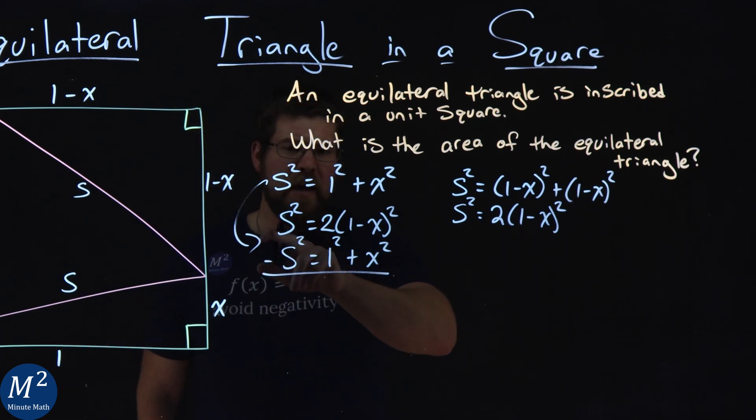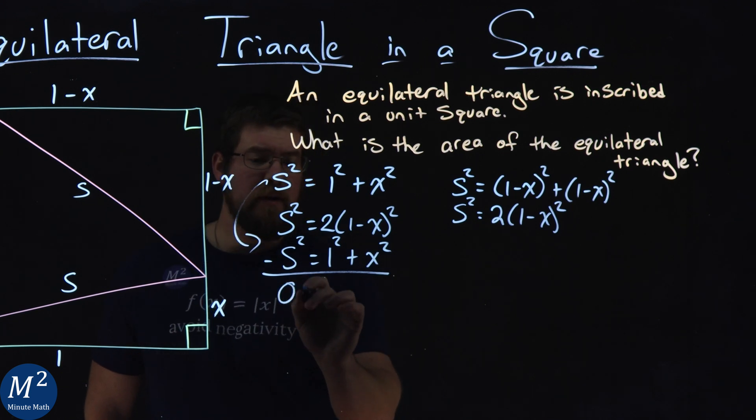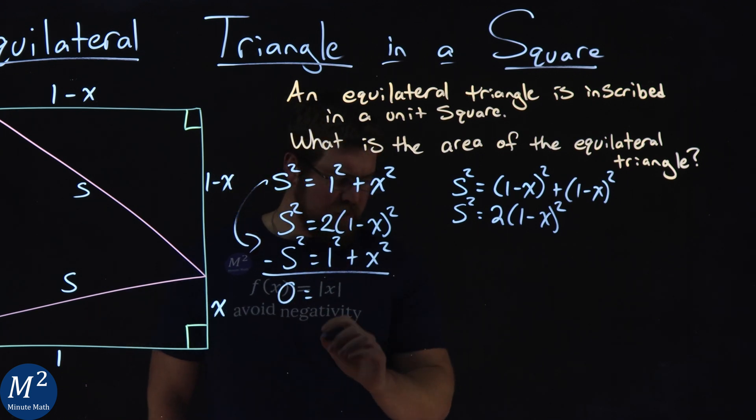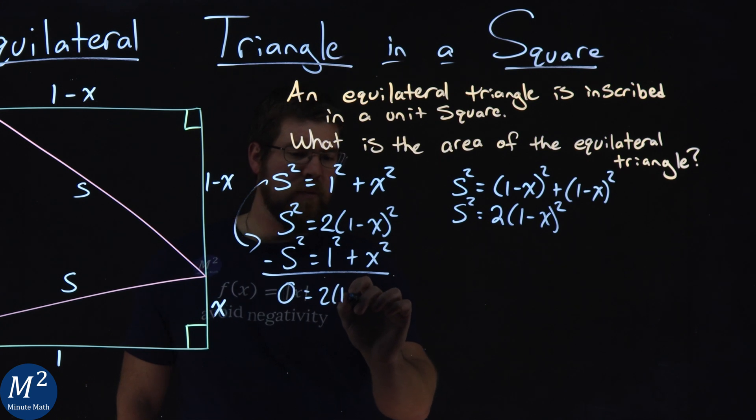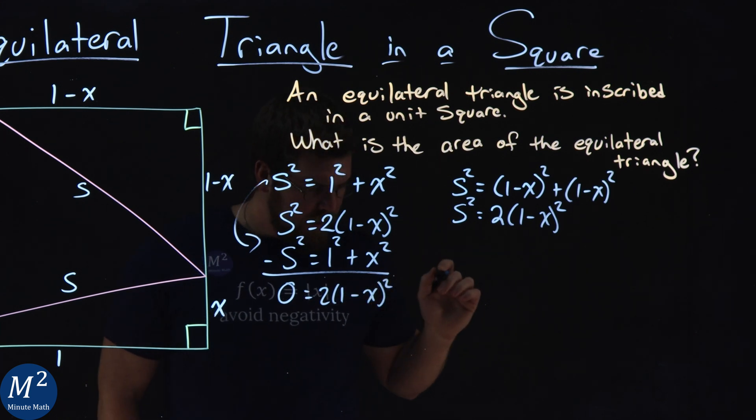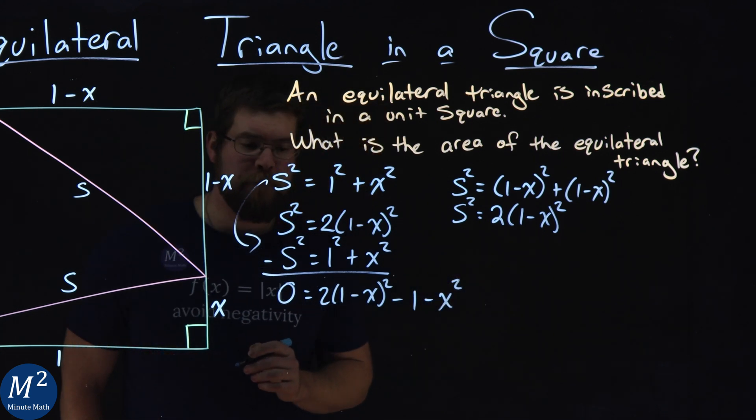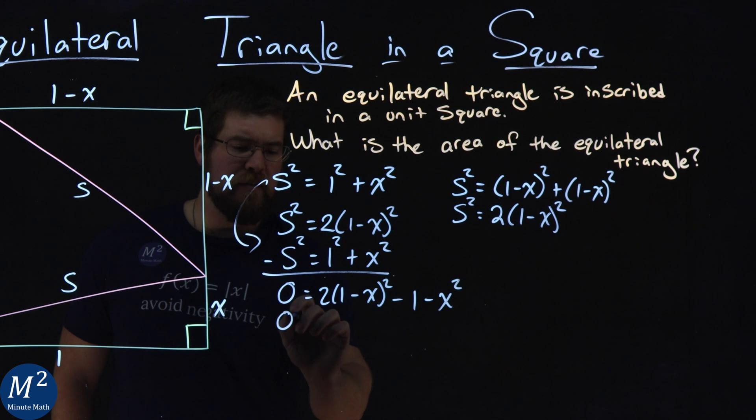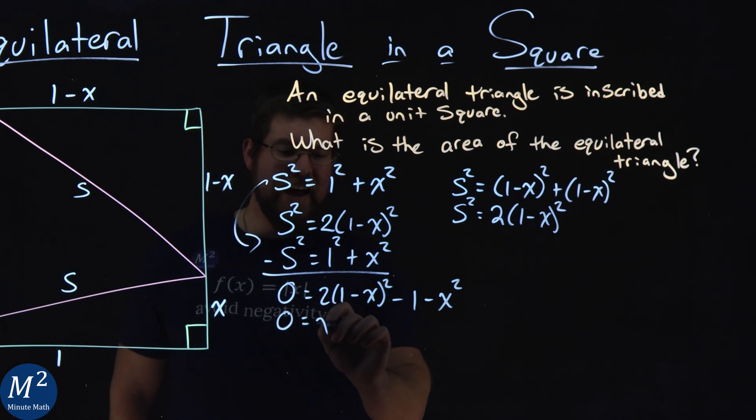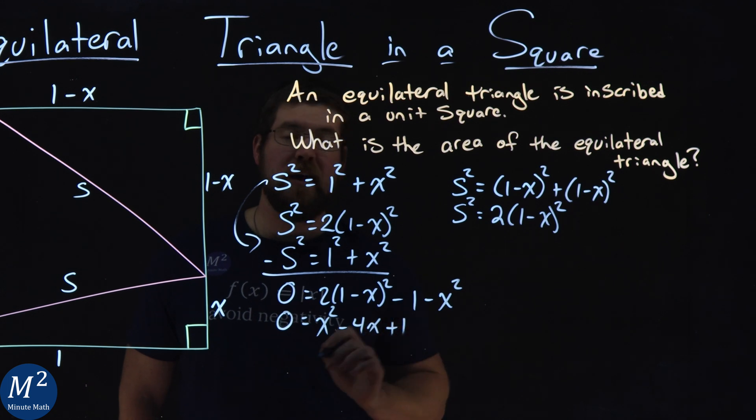When we subtract them, the S squareds cancel out. We get 0 here. And then this simplifies to be 2 times (1 minus X) squared minus 1 minus X squared. From there, we can simplify this. 0 is equal to X squared minus 4X plus 1.